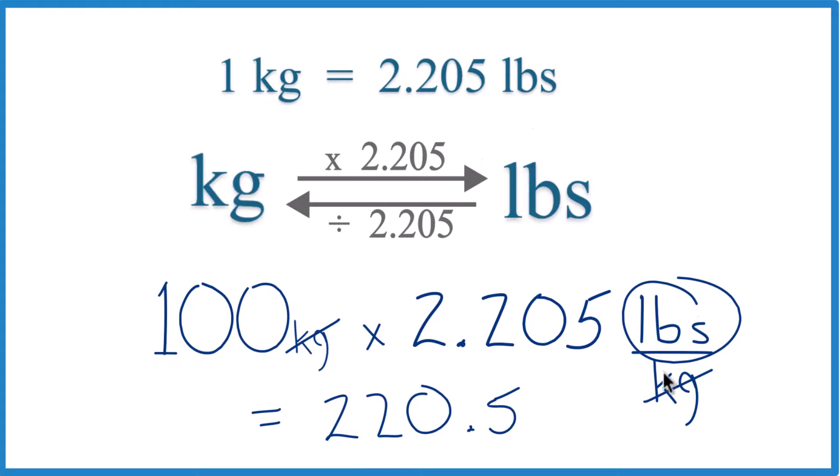So the units, we have pounds here. That's all that's left. We were going from kilograms to pounds, so we end up with 220.5 pounds. That's how much we have in 100 kilograms.